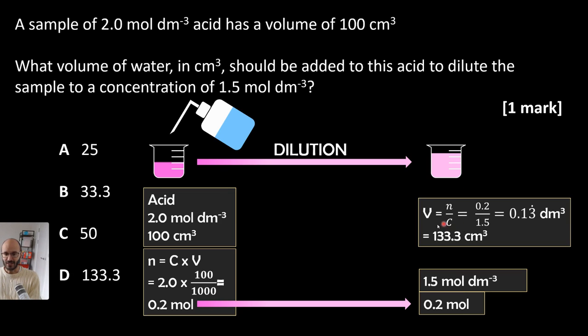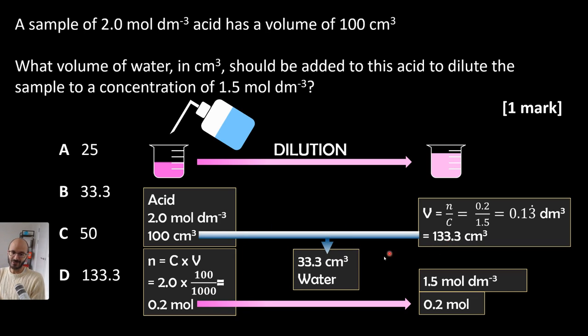Now you can calculate the final volume of the solution, which is moles over concentration. Therefore, how much water was added to a hundred centimeter cubed to get to 133.3? That would be the difference, which is this.